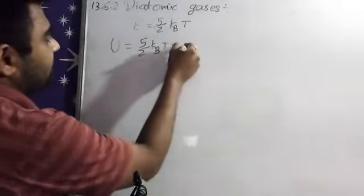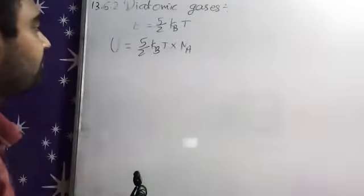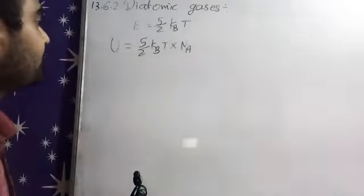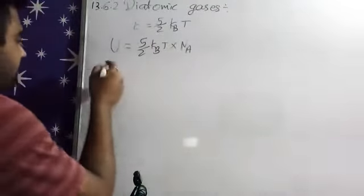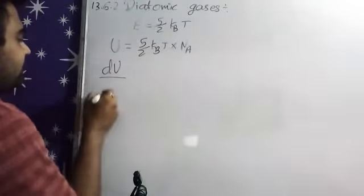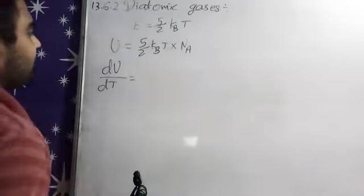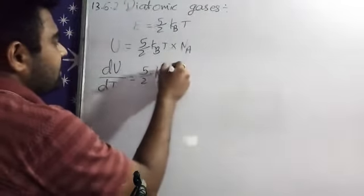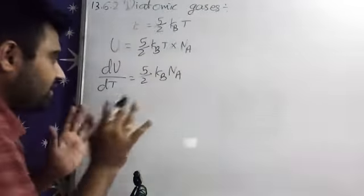Now we have to multiply with that Avogadro number, so we get all the energies, so that is U. Now we have to differentiate this energy with respect to temperature, so we are getting here 5 by 2 kB into Na, dT by dT will be 1.